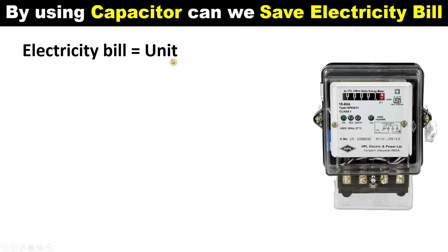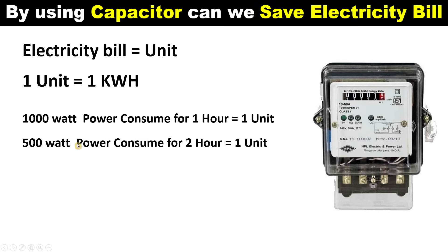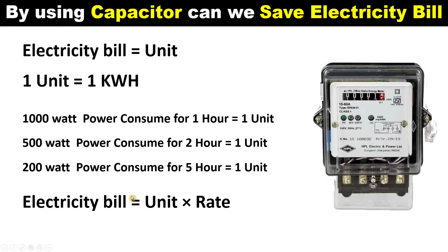To understand how one unit is increased, note that one unit equals one kilowatt-hour. If you connect a load of 1000 watts and run it for one hour, the energy meter will show a consumption of one unit. Similarly, a 500-watt load run for two hours equals one unit, and a 200-watt load run for five hours also equals one unit. Your total electricity bill is calculated by multiplying the units consumed by the rate per unit.